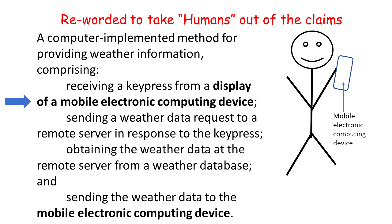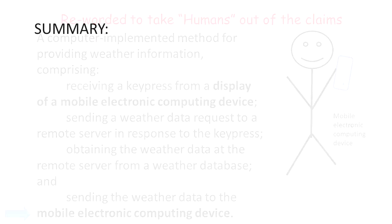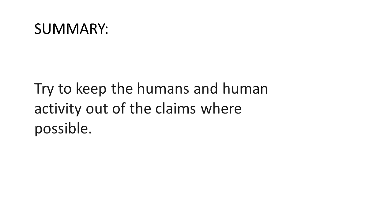The claim now reads: receiving a key press from a display — i.e., a touchscreen — of a mobile electronic computing device. And similarly, rather than having the claim language as sending the data directly to the user, we are sending the data to an electronic computing device, which can be the phone that the user has with them.